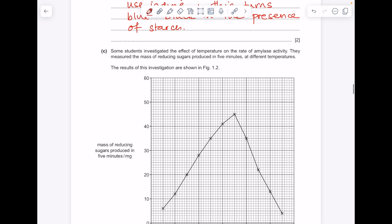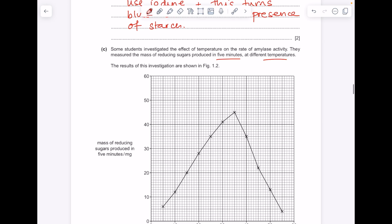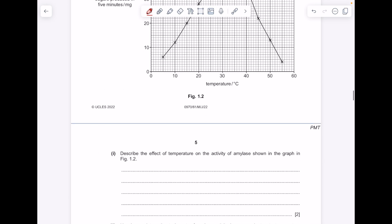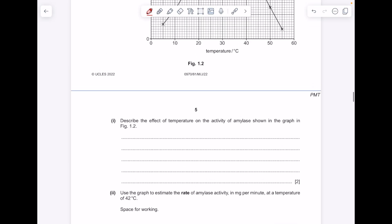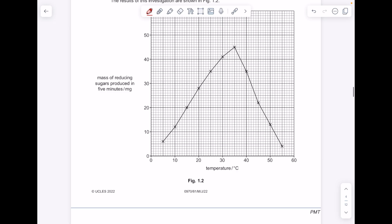Some students investigated the effect of temperature on the rate of amylase activity. They measured the mass of reducing sugars produced in 5 minutes at different temperatures. The results of this investigation are shown. Describe the effect of temperature on the activity of amylase shown in the graph in figure 1.2. So we can see that as the temperature increases to 35 degrees, we see an increase in the mass of reducing sugars produced, and then above 35 degrees, we see a decrease in the mass produced.